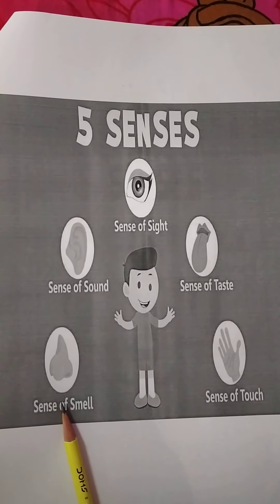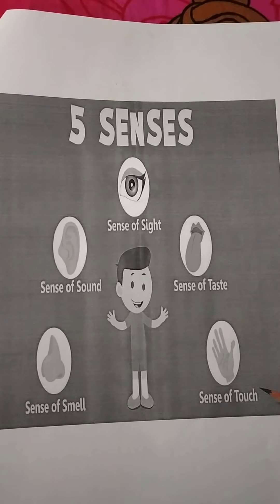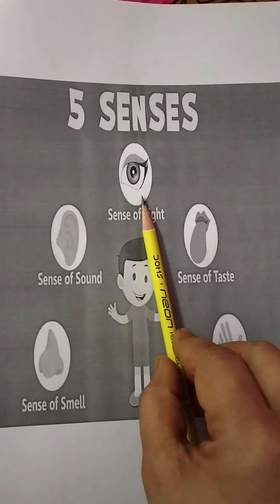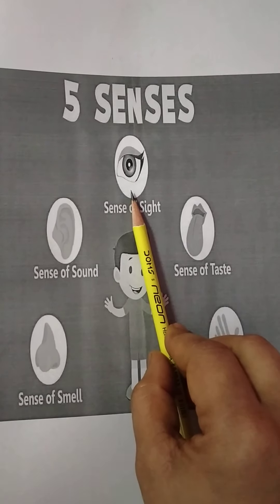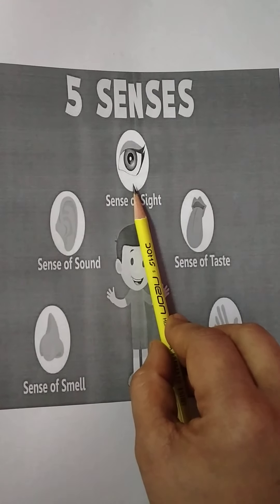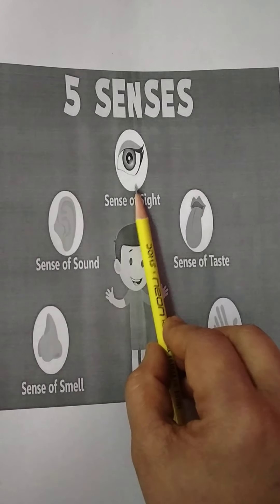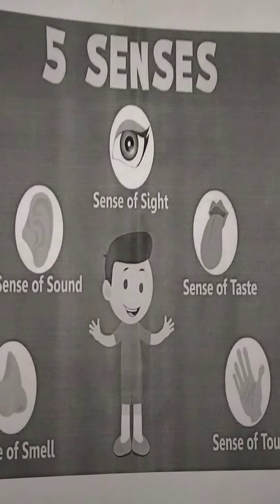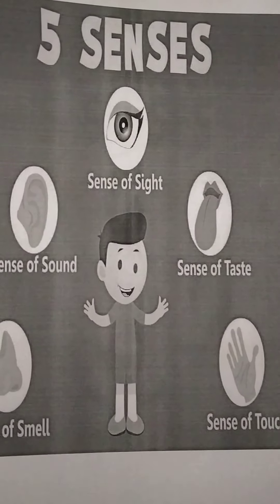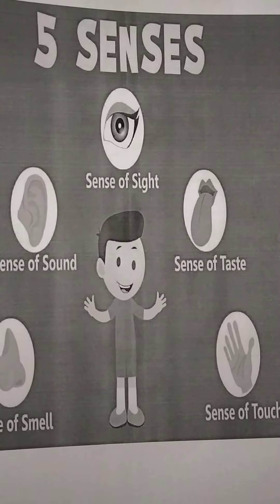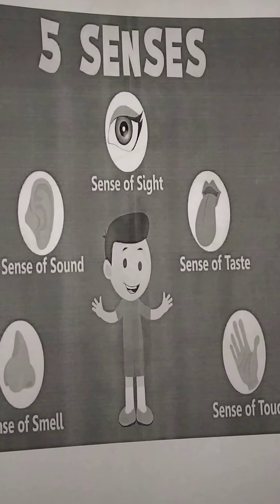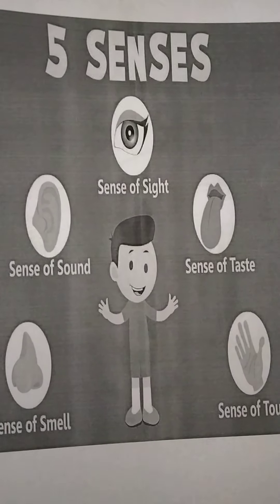This is our eyes. From which body part are you seeing things — color, size? Which body part can we use to see all these things? With our eyes. So the sense of sight is our eyes.